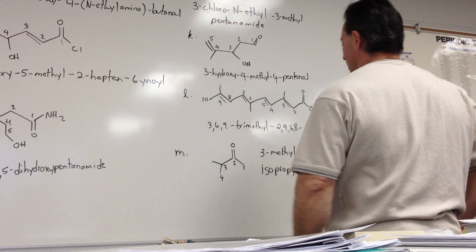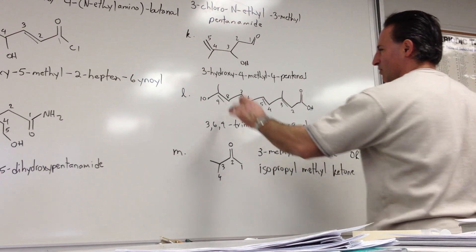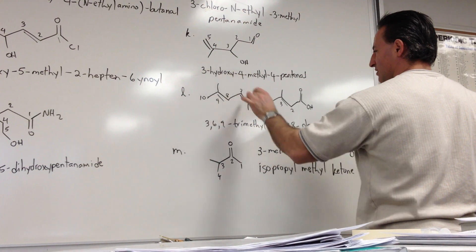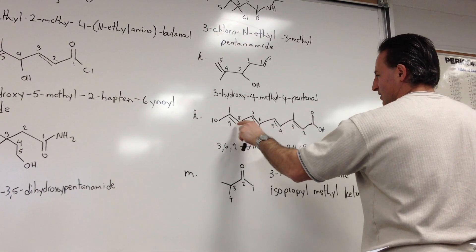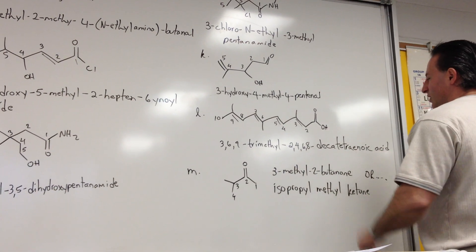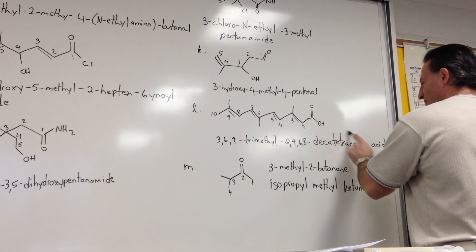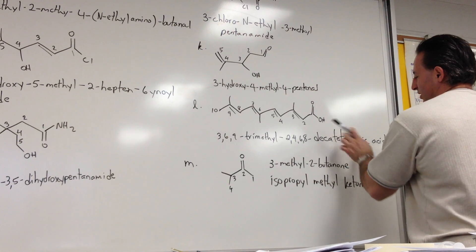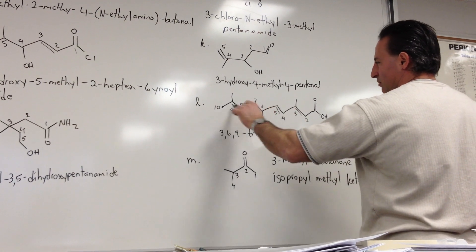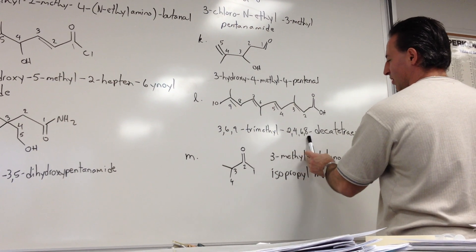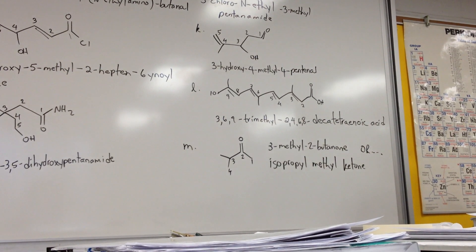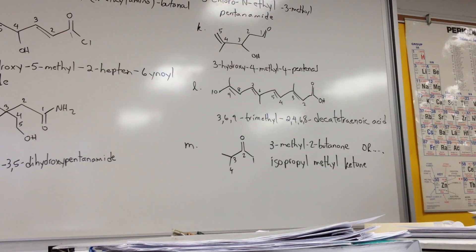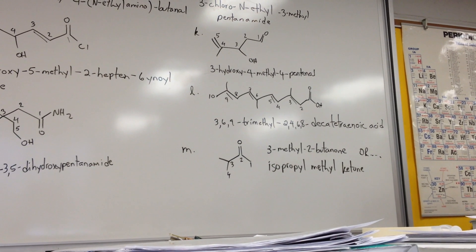This is a 10-carbon chain with methyl groups at the 9th, the 6th, and the 3rd position. Double bond at the 2nd, 4th, 6th, and 8th position. So we call it a decanoic acid, but with the tetraene put in the middle of the word to show that there are 4 double bonds in it, and these numbers apply to where the double bonds are appearing. So we call this 3,6,9-trimethyl-2,4,6,8-decatetraenoic acid.